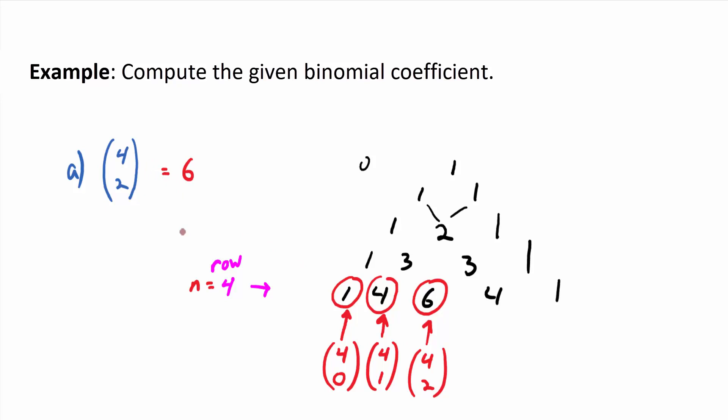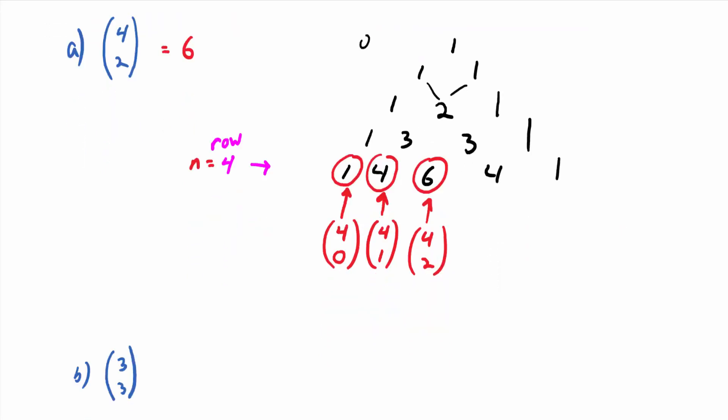Is that clear how you use Pascal's triangle to compute it? You just have to remember to start counting at 0 to get down to the right row and then in the right amount. Does that make sense? Okay. You can also do it on the calculator. I'll show you that in a little while. There's also a formula for it which we won't get to. You're either going to use Pascal's triangle or your calculator to get 4 choose 2 or any other binomial coefficient.